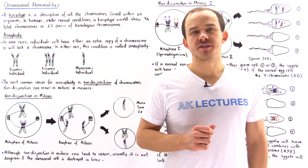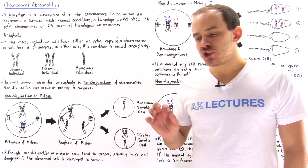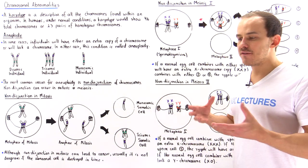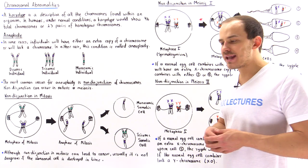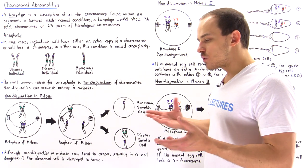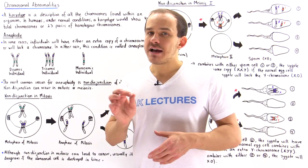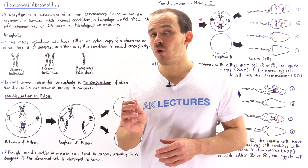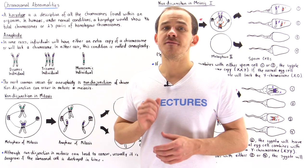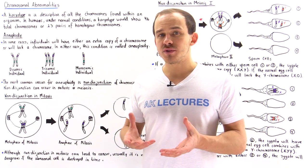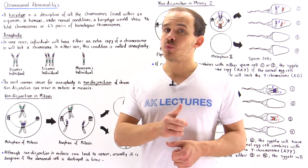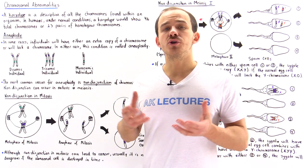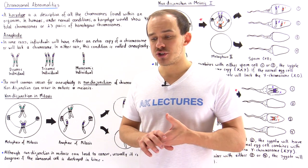In diploid organisms, there's a 2N number of chromosomes in every single somatic cell. For example, in humans, every single somatic cell has 46 individual chromosomes, or 23 pairs of homologous chromosomes, under normal conditions.